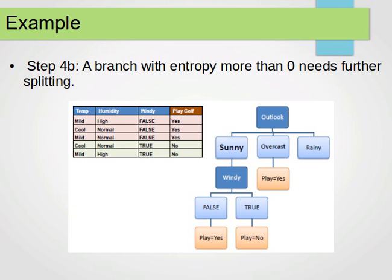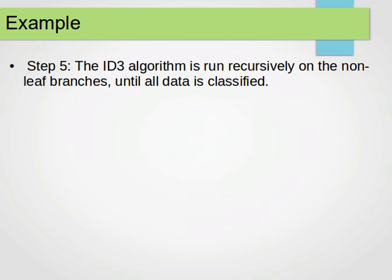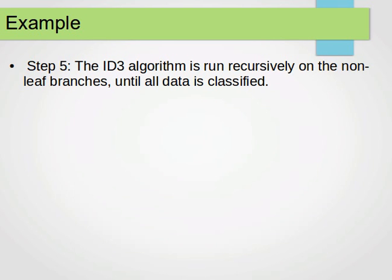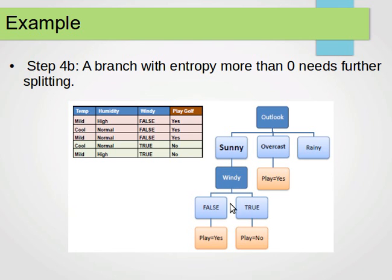That gives us our root node and our leaf nodes. The ID3 algorithm is run recursively — the same process is repeated until we end up with all leaf nodes where the entropy is zero. If our data is very large or we have too many variables, this can become expensive; we can address how to deal with that in a later video. The ID3 algorithm runs recursively on the non-leaf branches until all data is classified, each time calculating entropy before and after the split and choosing the variable with the highest information gain.